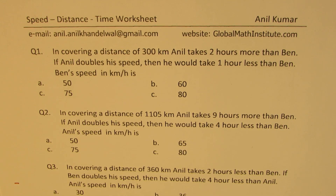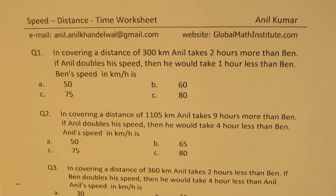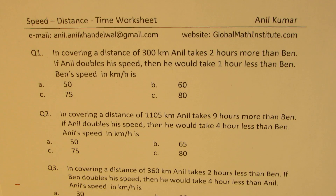Question number two is very similar to the first one. It says: in covering a distance of 1105 kilometers, Anil takes nine hours more than Ben. If Anil doubles his speed, then he would take four hours less than Ben. Anil's speed in kilometers per hour is what? So earlier we were wanting to find Ben's speed; now we want Anil's speed.